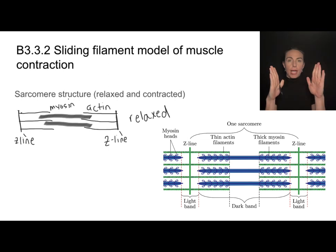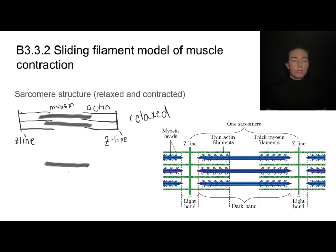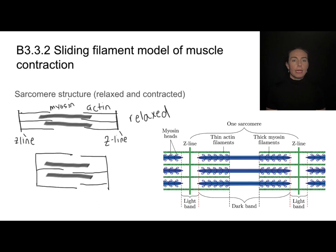In order to get a muscle to contract, you need to shorten it, which means the z-lines need to come closer together. What does not change is the myosin — it stays in the same place. What happens is that myosin pulls the actin filaments closer towards the center. The z-lines are still attached to the actin, but now the actin has slid much closer to the center, and the z-lines have come closer together. This is what a relaxed versus contracted sarcomere looks like.